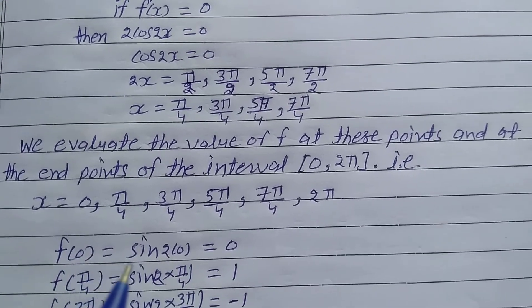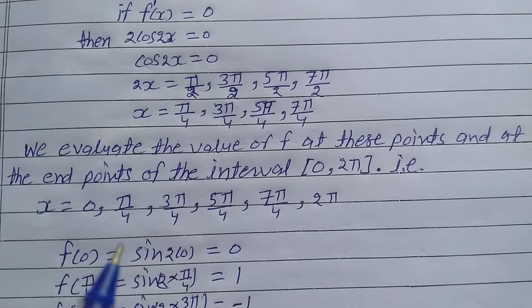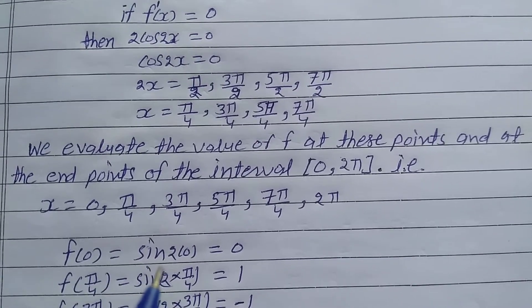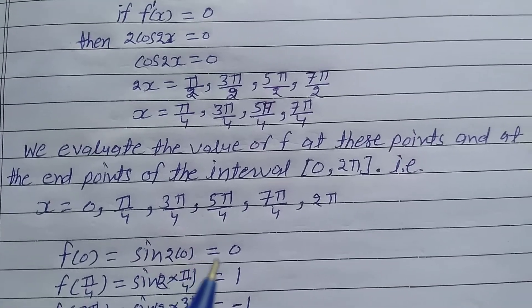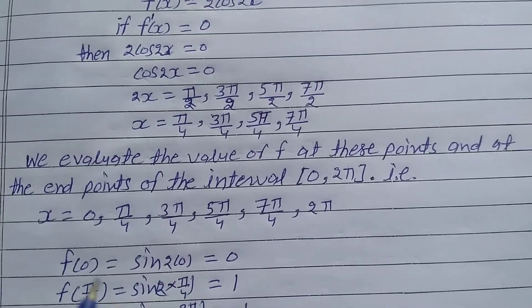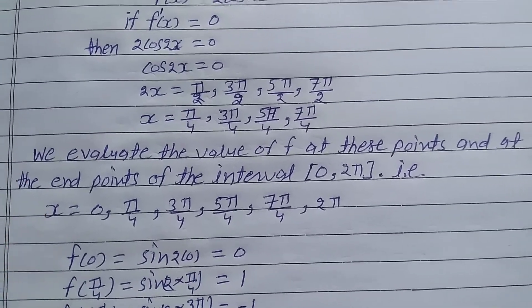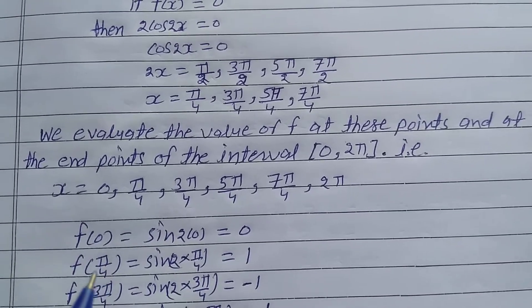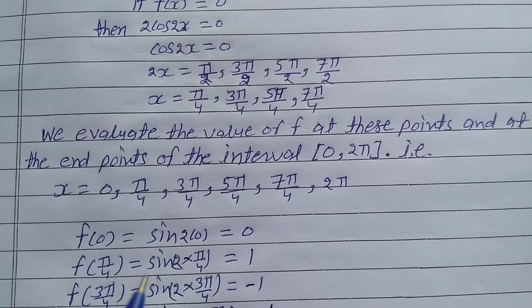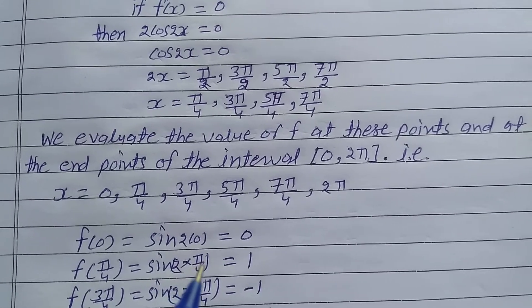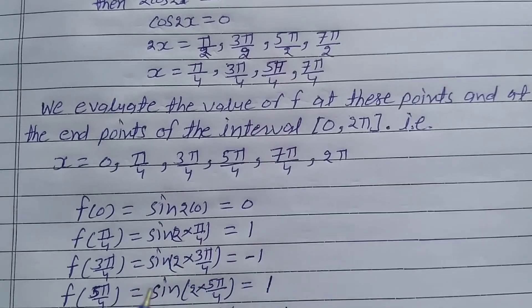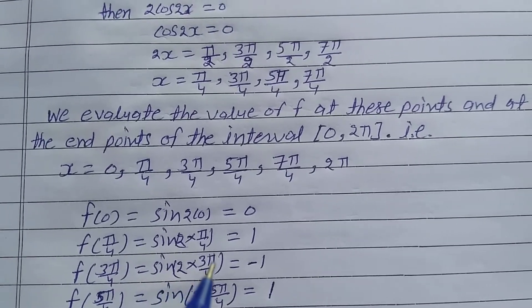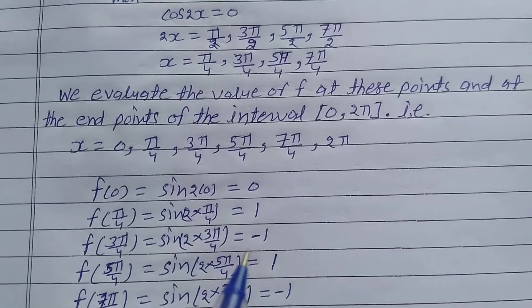f(0) = sine(2×0) = sine(0) = 0. f(π/4) = sine(2 × π/4) = sine(π/2) = 1. f(3π/4) = sine(2 × 3π/4) = sine(3π/2) = −1.